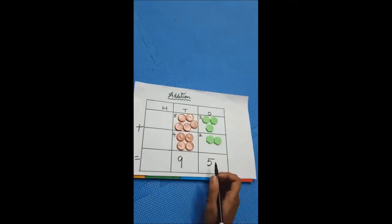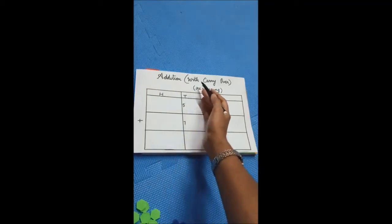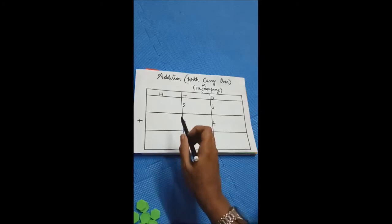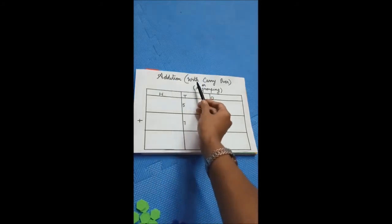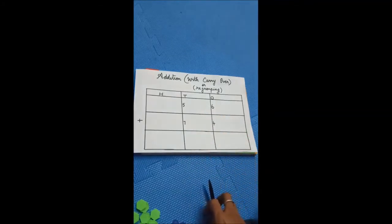Shall we see one more activity now? See the second problem for the activity. This is addition with carry over, or with regrouping. In the previous sum it was addition without regrouping — we did not regroup any numbers and wrote the total as it was. But this one is addition with regrouping, where you are going to carry over the numbers. Shall we do this problem now?